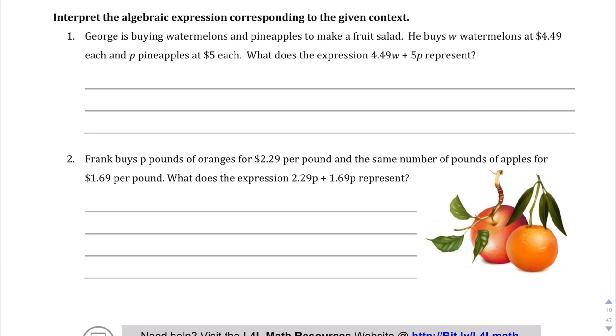George is buying watermelons and pineapples to make a fruit salad. But I don't know why we're always buying fruit for math problems. But anyway, he buys W watermelons at $4.49 each and P pineapples at $5 each. What does the expression 4.49W plus 5P represent? Well, obviously, it represents the total cost of buying W watermelons and P pineapples. And depending on what number you put in for W and P, it obviously changes the cost of all the fruit you're buying.